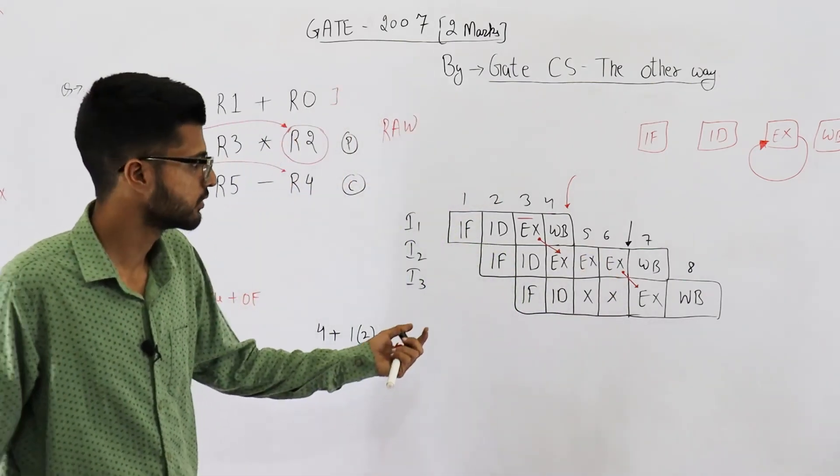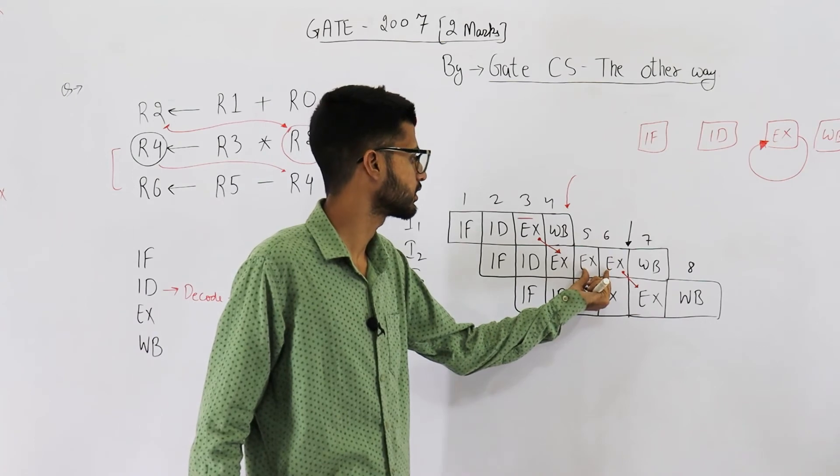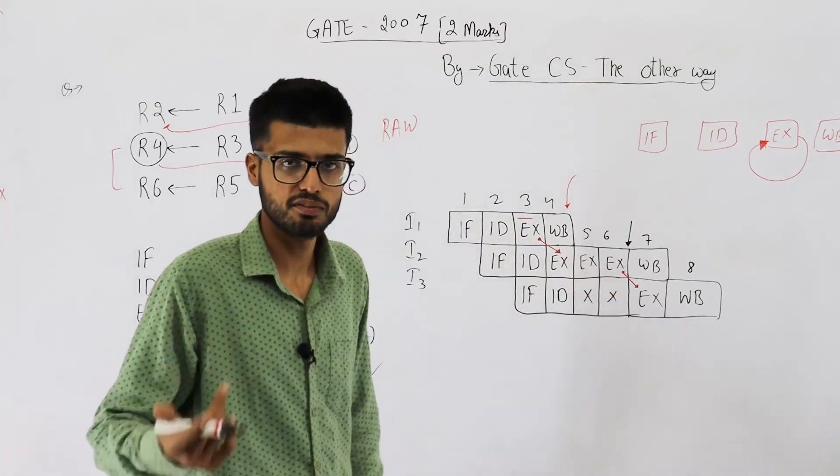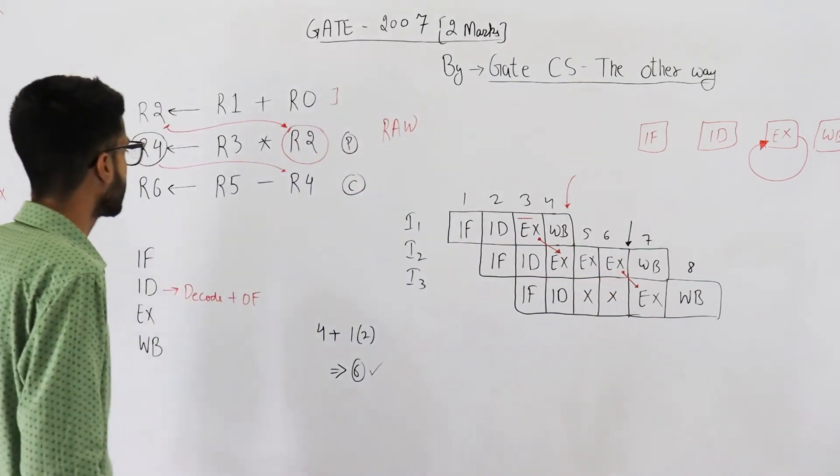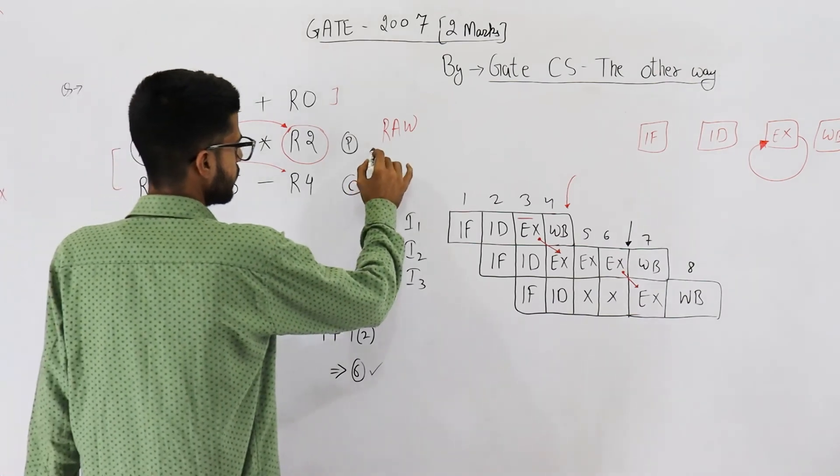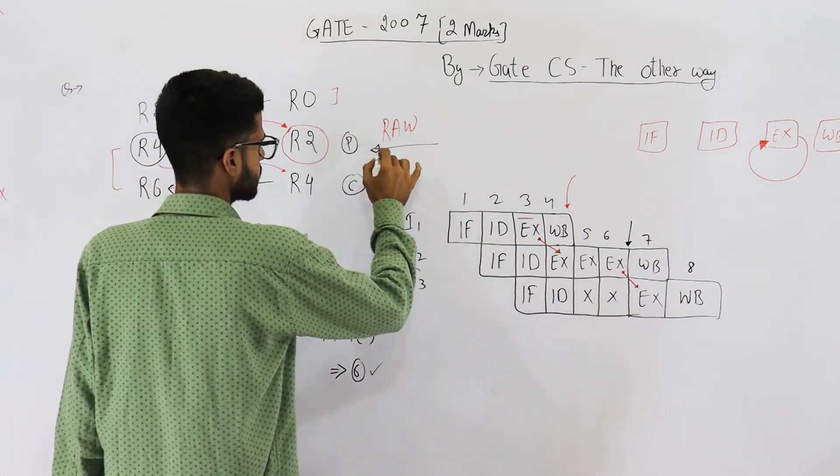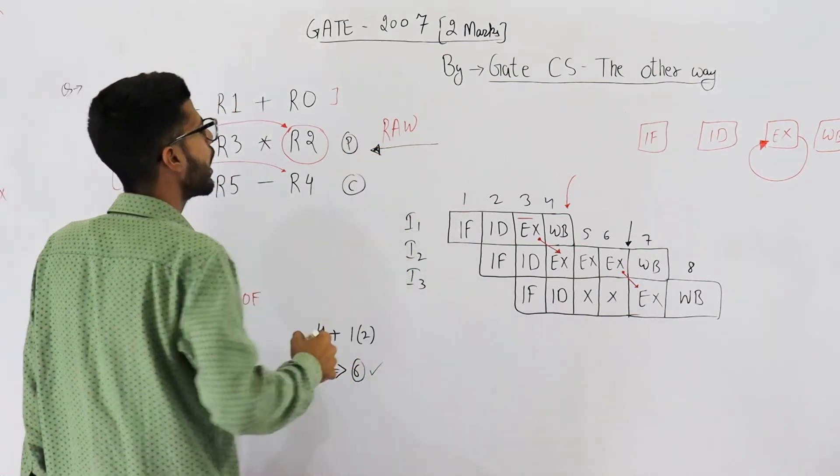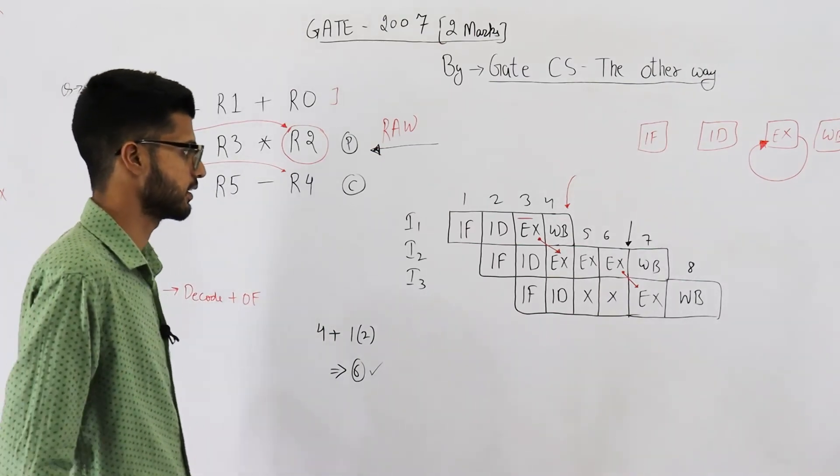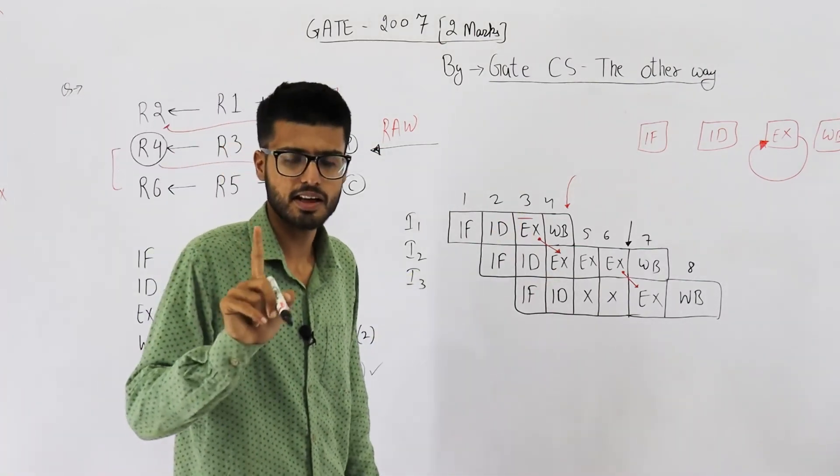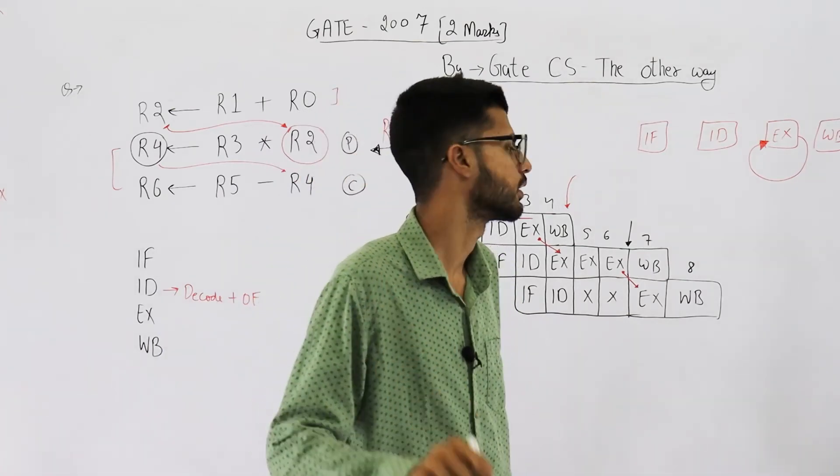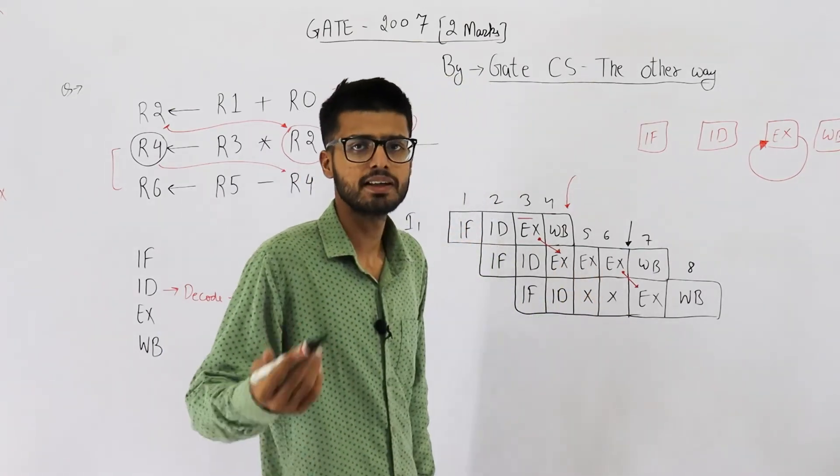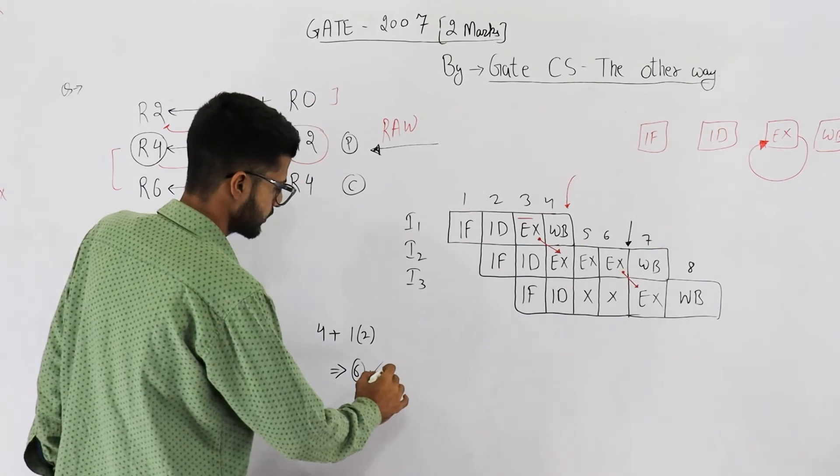That means we need to consider that the instruction I2 is using more than one execute cycles. And there's only one such instruction, that is I2. How many extra cycles is it using? Anyways all the instructions have to have one execute cycle. It is having 3, how many are extra? That's 2.